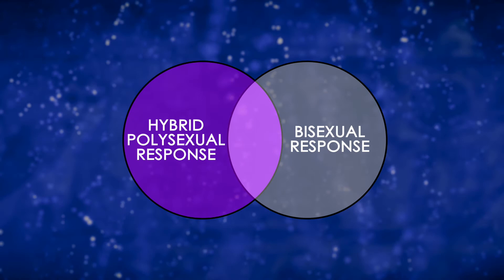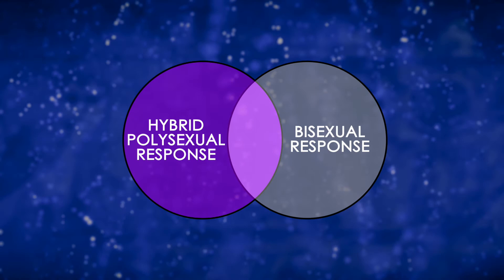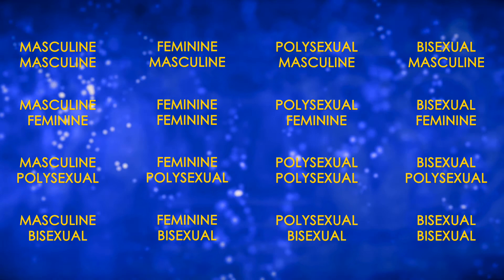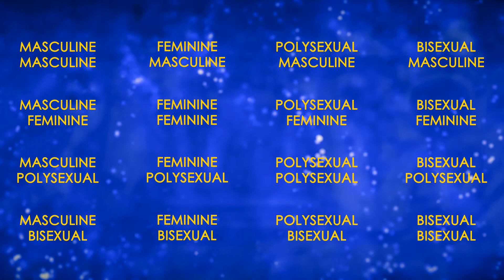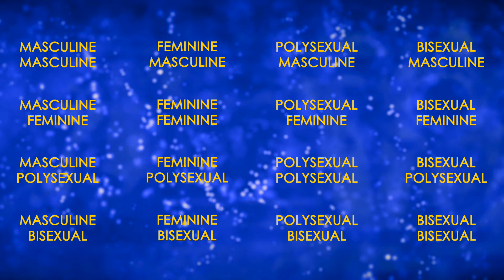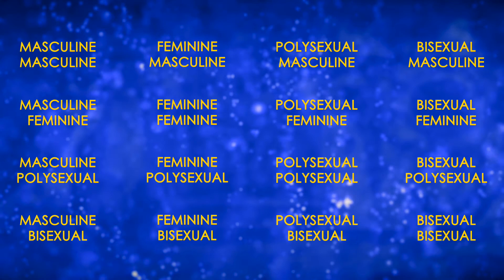Whereas some people will inherit an intense experience of gender, others will inherit a mild experience. And when mild enough, a person's gender may not be evident. Consider a male whose default is to perceive the world through his masculine operating system but respond to it using his feminine system. If his feminine response is sufficiently mild, and especially if he has been taught through social pressures to respond with masculine behaviors, it's possible for his feminine tendencies to remain hidden, even from himself. The forces of nurture sometimes override those of nature.